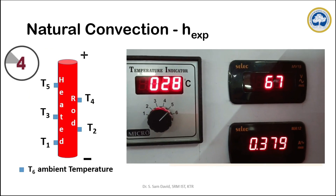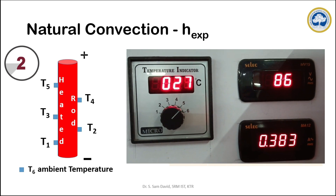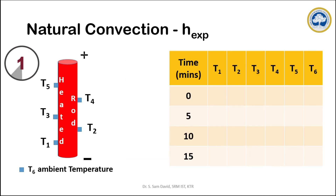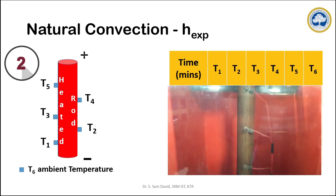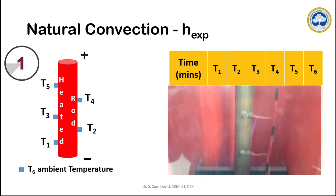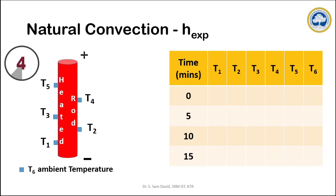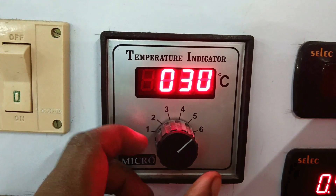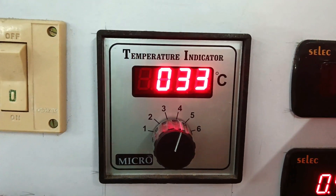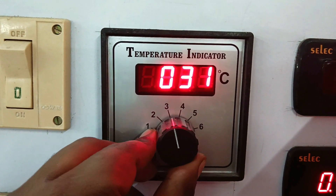In a typical experiment, after giving the power input, the heater rod will start getting heated. After some time, the heater rod will reach a steady state temperature. To identify whether the system has attained steady state, we take readings using a tabular column recording time and all 6 thermocouple readings. The metal rod is fitted with 5 thermocouples to measure its temperature, and thermocouple 6 measures the ambient temperature. By rotating the knob, we can see each thermocouple reading on the digital display.